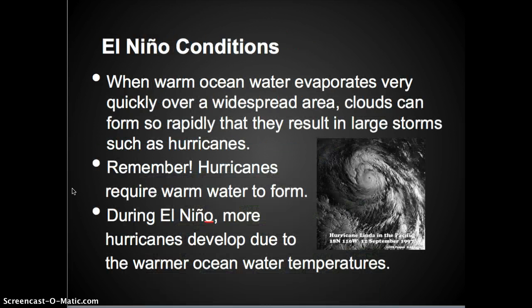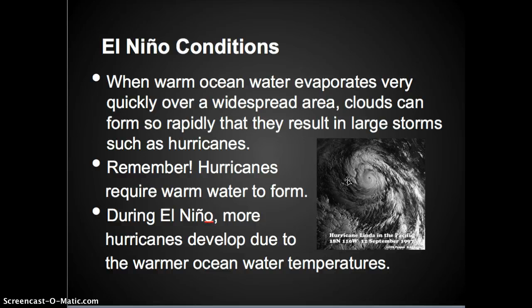When warm ocean water evaporates very quickly over a widespread area, clouds can form so rapidly that they result in large storms such as hurricanes. Remember that hurricanes require warm water to form. During El Niño, more hurricanes develop due to the warmer ocean water temperatures.